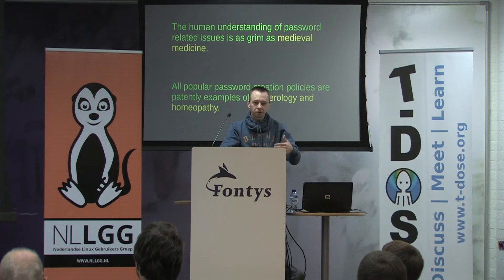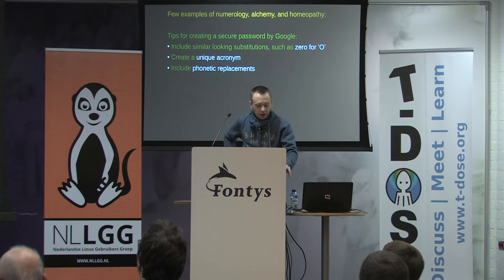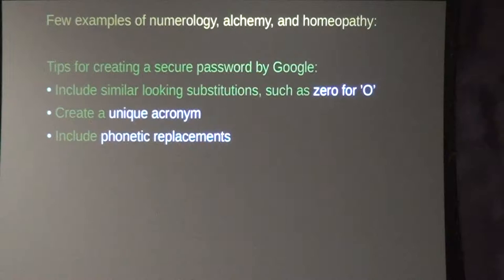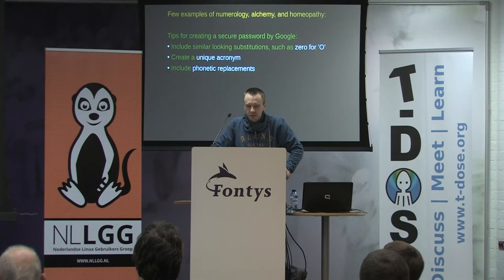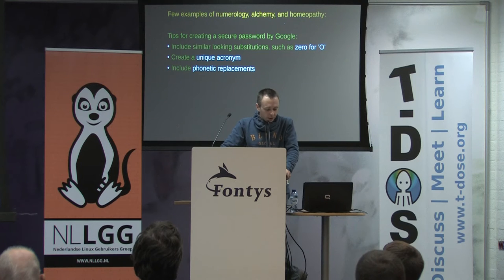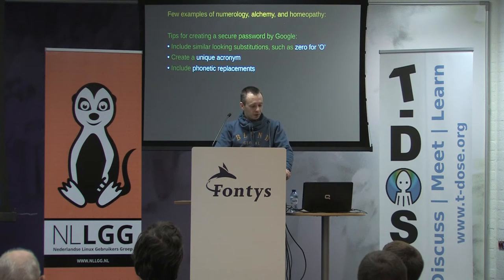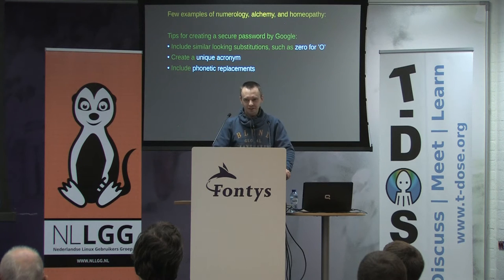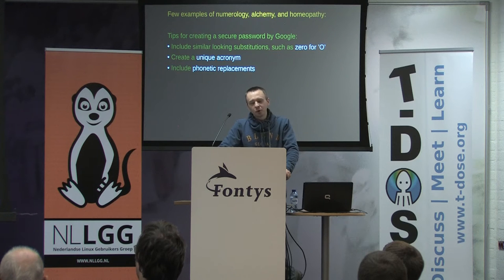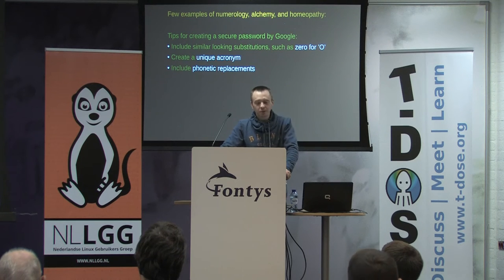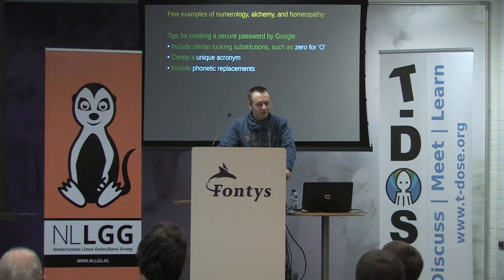All popular password creation policies are patently examples of numerology and homeopathy. Here's an example by Google — tips for creating a secure password: include similar-looking substitutions such as 0 for O, 1 for L, etc.; create a unique acronym; and include phonetic replacements. You have seen similar recommendations nearly everywhere. As a digression, I want to pay attention to the word 'unique' — does anybody sense an evil irony in the word 'unique' in this context? In what set must uniqueness be assured? If in the set of all passwords, then I'm not supposed to know this set.